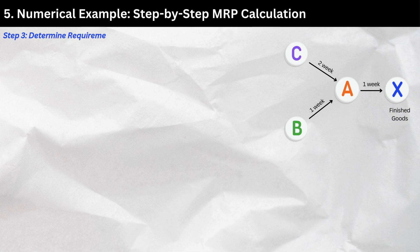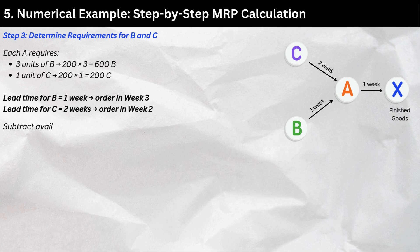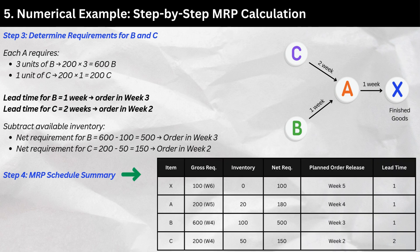Step 3 — Determine requirements for B and C. Each A requires 3 units of B: 200 × 3 = 600 B, and 1 unit of C: 200 × 1 = 200 C. Lead time for B = 1 week, so order in week 3. Lead time for C = 2 weeks, so order in week 2. Subtracting available inventory: net requirement for B = 600 − 100 = 500, order in week 3. Net requirement for C = 200 − 50 = 150, order in week 2. The MRP Schedule Summary shows each item, its gross requirement, net requirement offset from inventory, the week the order should be raised, and lead time.